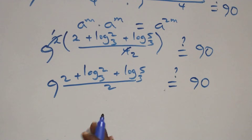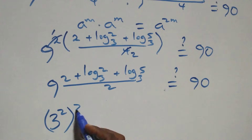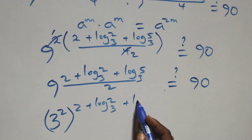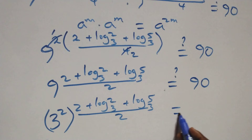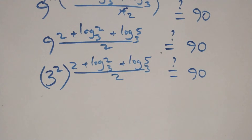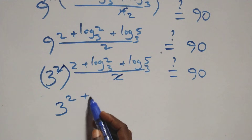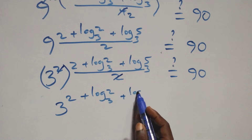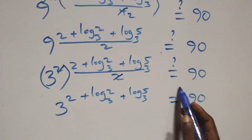From here we write 9 as 3 squared, so we have (3 squared) raised to the power of (2 plus log base 3 of 2 plus log base 3 of 5) over 2, equals 90. The powers multiply: the 2 in 3² and the 2 in the denominator cancel, leaving 3 raised to the power of (2 plus log base 3 of 2 plus log base 3 of 5) equals 90.